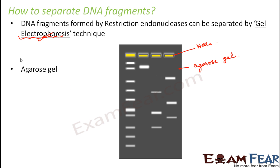One important component is agarose gel. This gel is made from a naturally existing polysaccharide which is normally extracted from seaweed. It is made from agar and that is why the name is agarose. We use this agarose gel because it is very easy to store, very easy to recover, and very easy to cast. Because of all these features, it is used for the process of electrophoresis.